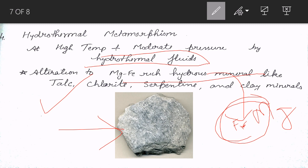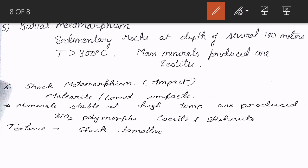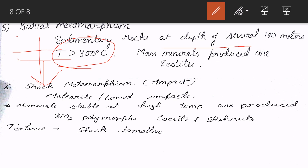Next is burial metamorphism. When sedimentary rocks are buried to a depth beyond the scope of diagenesis, they are exposed to a region where metamorphism takes place. The sediments in that zone get altered and show burial metamorphism. The main minerals produced here are zeolites, which are signature minerals for sedimentary rocks undergoing metamorphism.